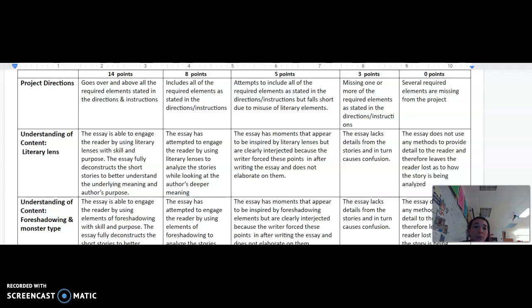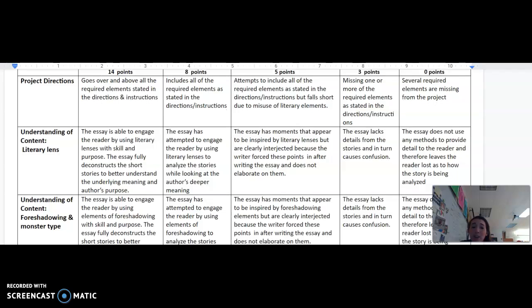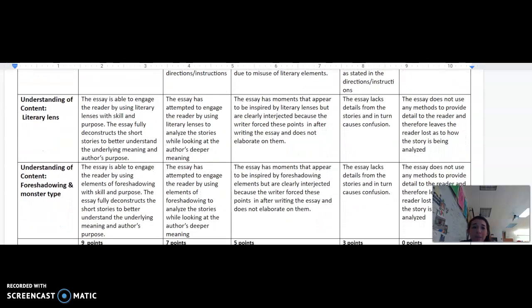Alright, 14 point category for understanding content as far as foreshadowing and monster types. All of the short stories recommended are in the horror category, so you would need to know the monster types and foreshadowing. For the highest amount of points, you show that you understand foreshadowing with skill and purpose, and that you can identify the monster types while showing the author's underlying purpose. 8 points shows that you attempted to do this but just fall slightly short.